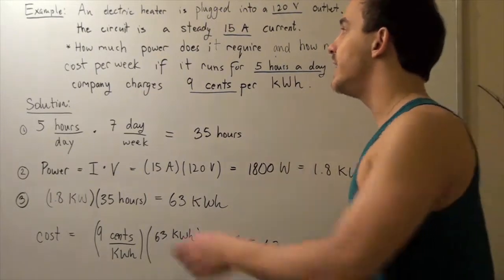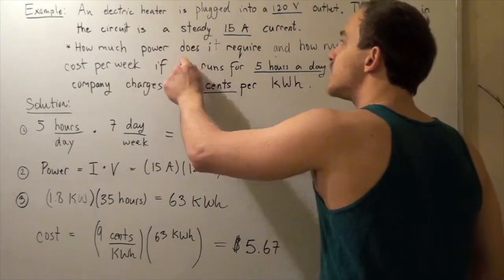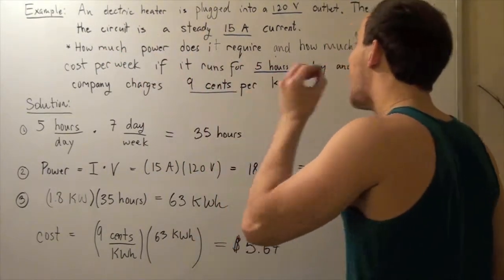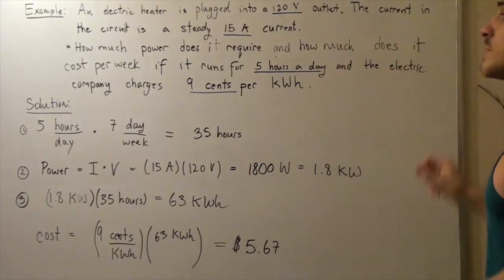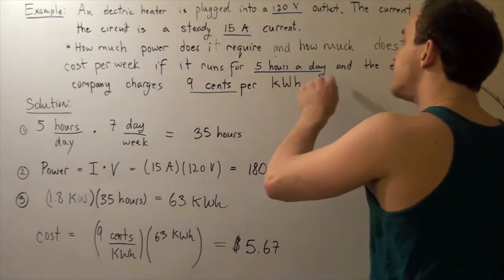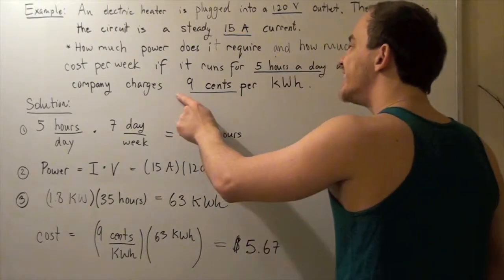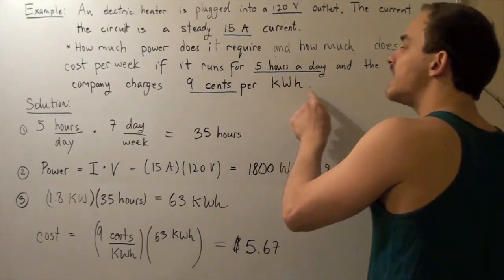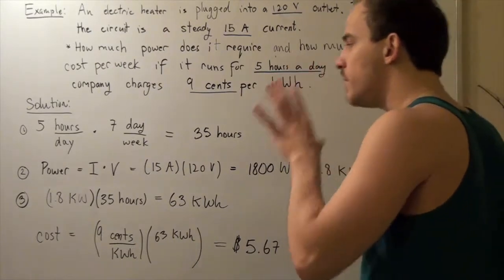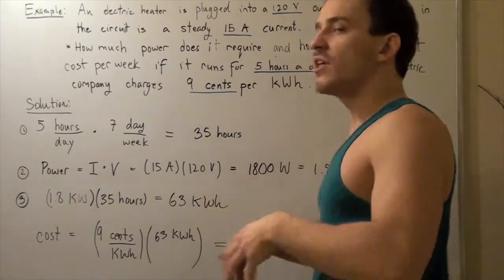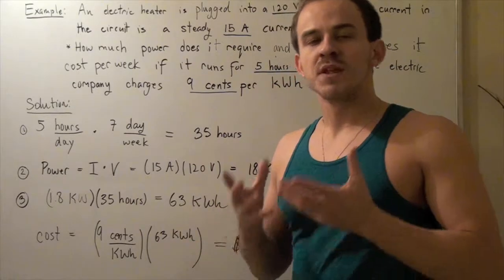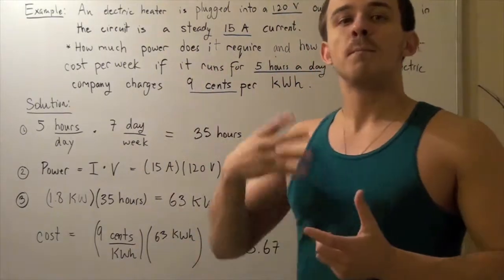We want to find how much power the electric heater requires and how much it costs per week if it runs 5 hours a day for 7 days and the electric company charges 9 cents per kilowatt hour. To begin, we must first find the total number of hours the heater runs per week.